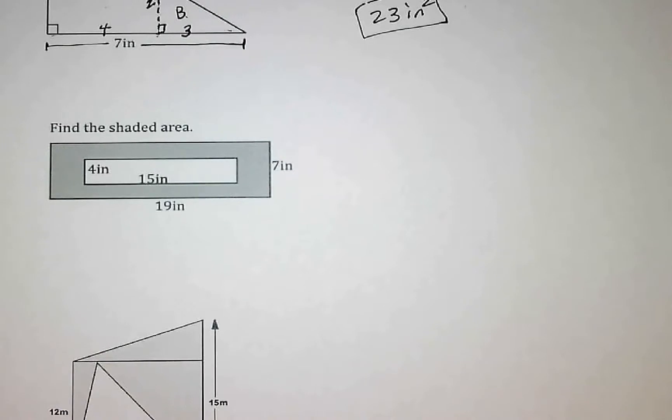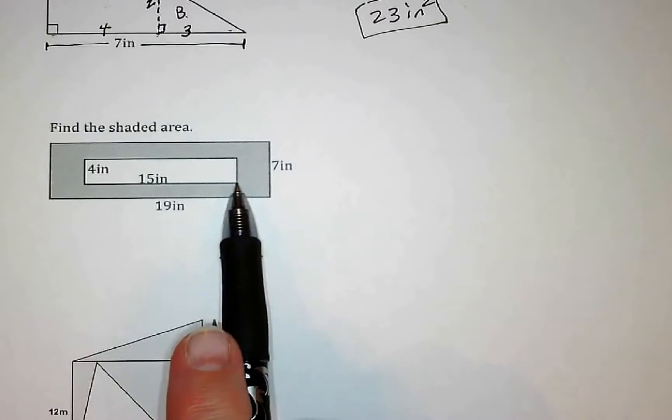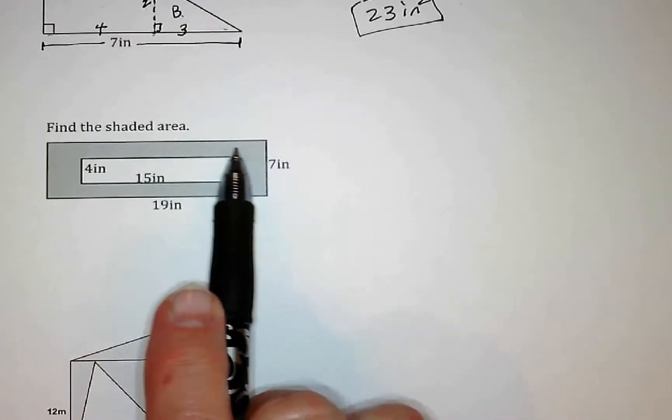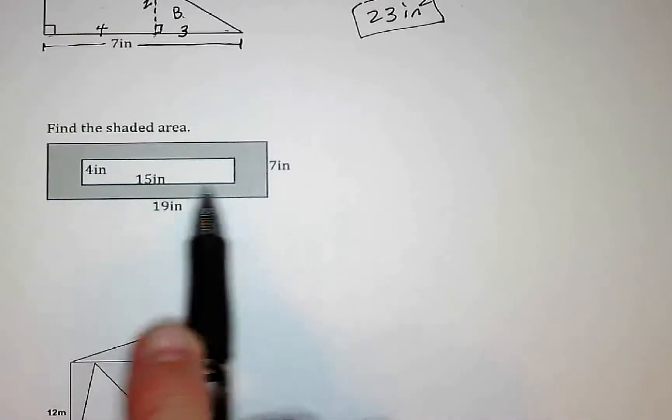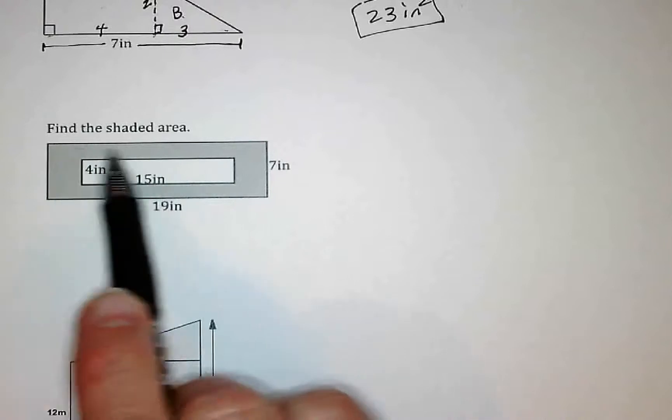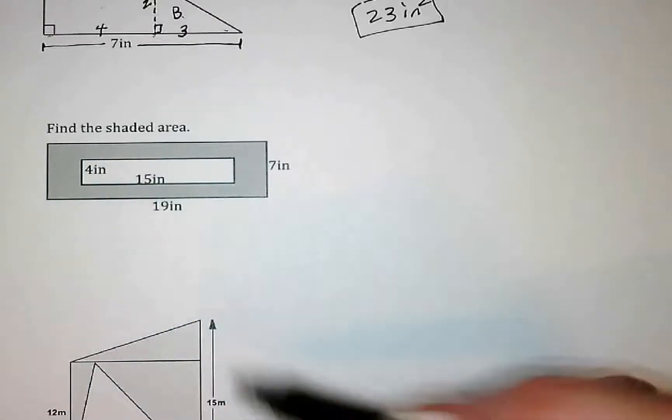We're going to continue with our second example under 1C notes. This one is kind of familiar to what we just did with circles, where we have two shapes, both rectangles, one inside the other, and we want just this outside shaded area.